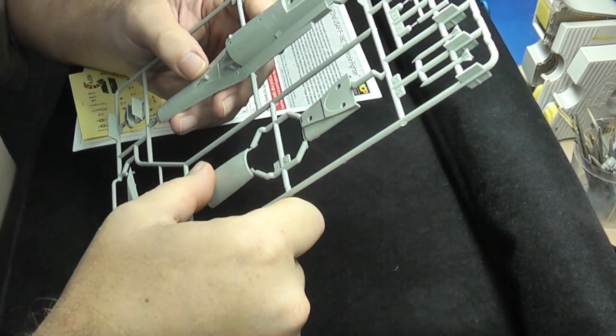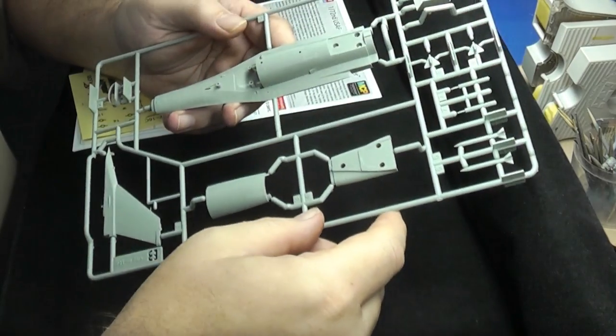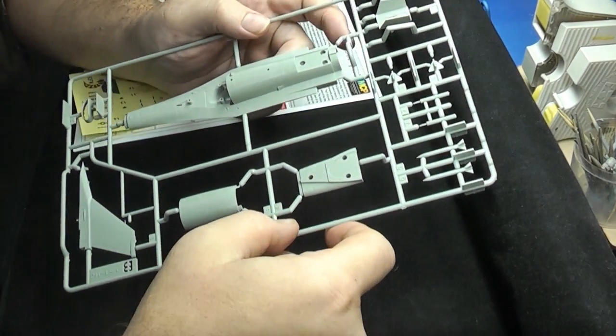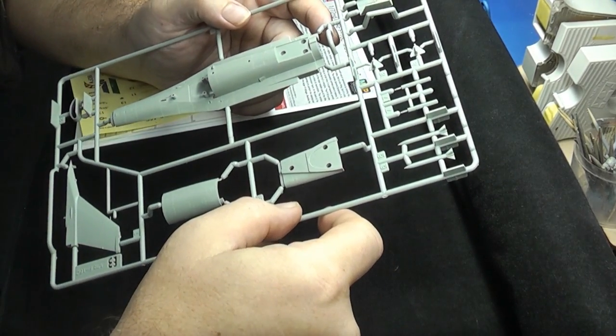And on the tail. And yeah, everything just snaps together. It doesn't get much easier than that. This kit's really for kids or beginner modelers who, you know, just want to throw something together.